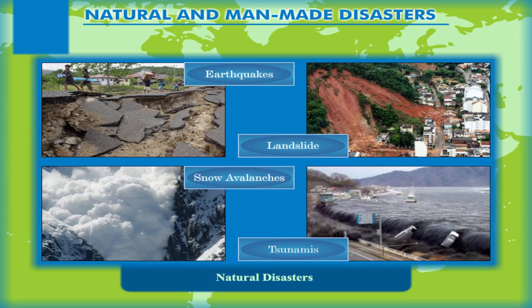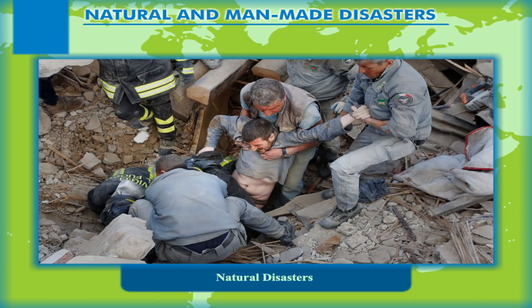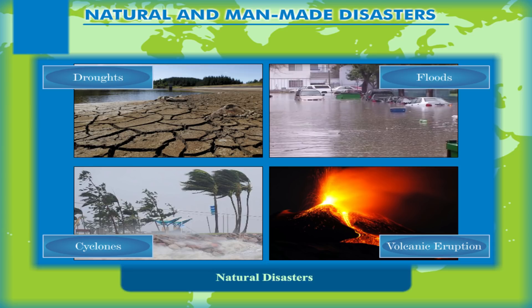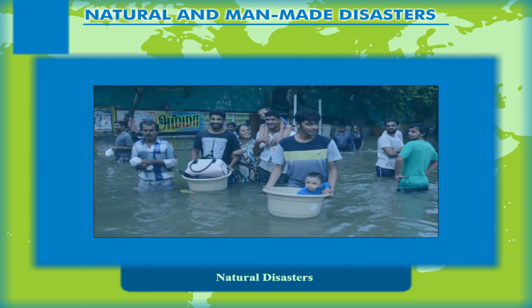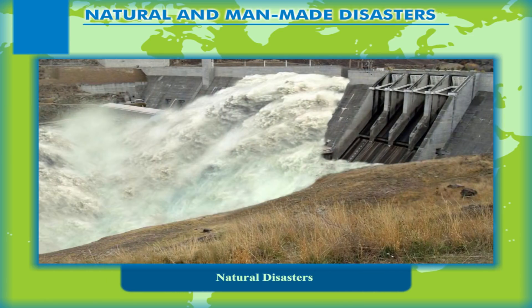Many natural disasters are a sudden fury of nature and give us no time for evacuation. Earthquakes, landslides, slow avalanches and tsunamis — tidal waves caused by undersea earthquakes — are such disasters. It is only mitigation and preparedness which can save lives and property from extensive damage. Damage due to some natural hazards such as droughts, floods, cyclones, volcanic eruption etc. can be prevented because these take time to occur. People can be forewarned and evacuated to safe shelters before the disasters strike.